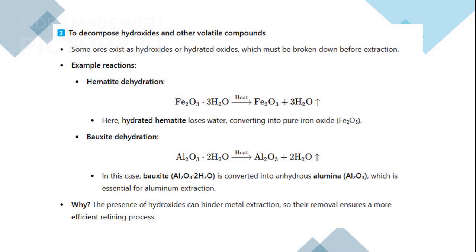Calcination also decomposes hydroxides and other volatile compounds, such as hematite and bauxite. This decomposition is vital for efficient refining, ensuring the purity of extracted metals.